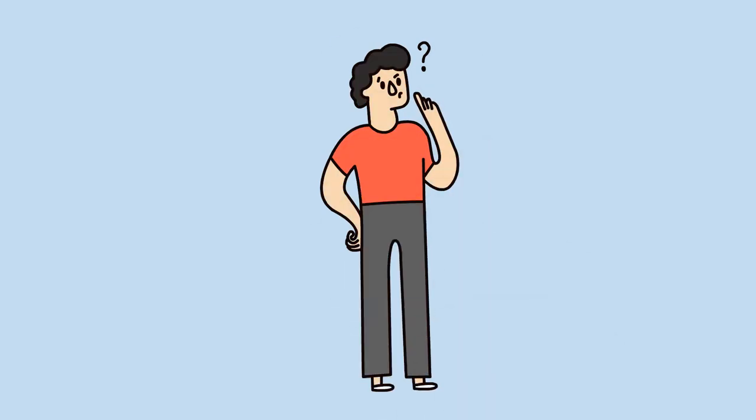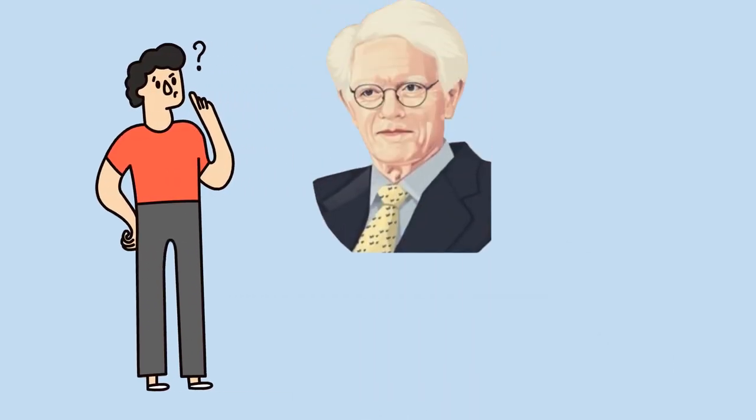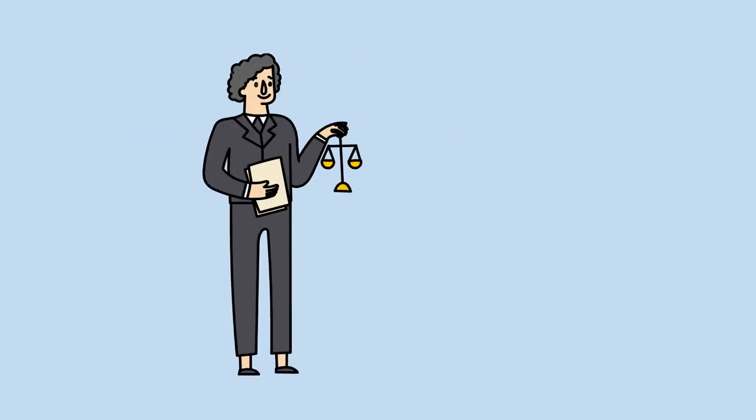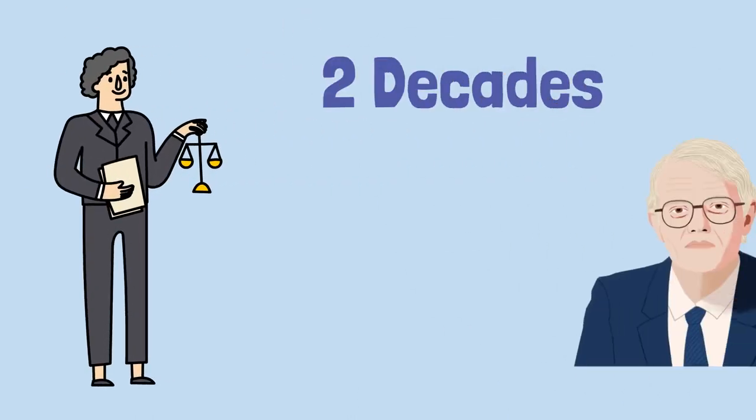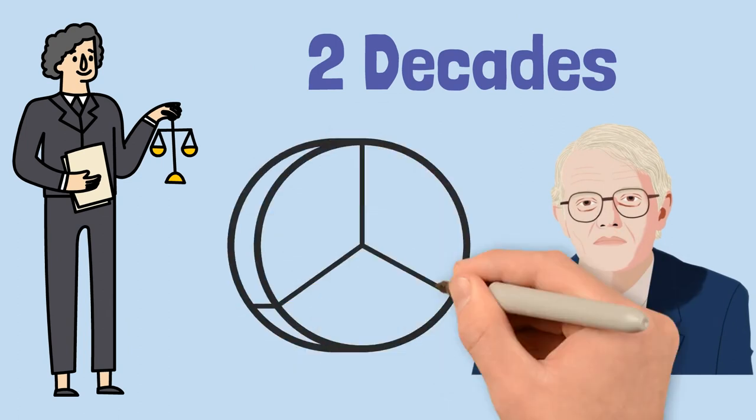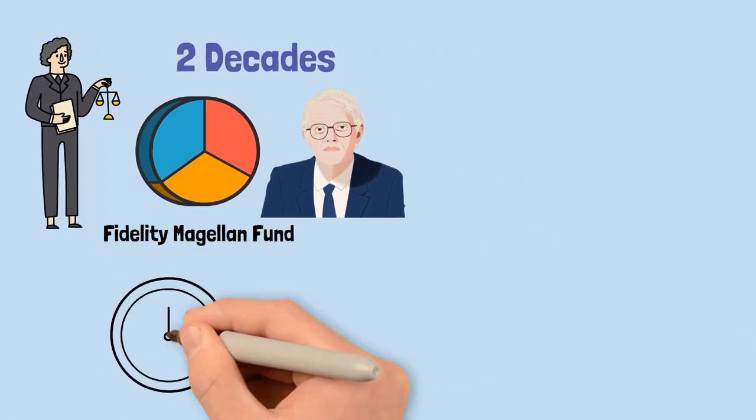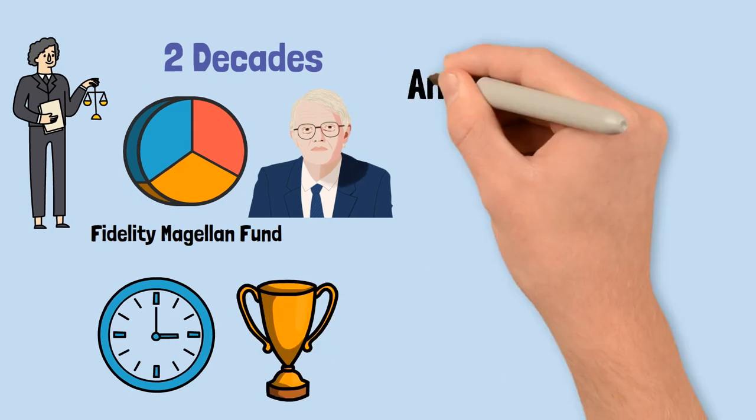For those of you who are unfamiliar, Peter Lynch is a name that will forever be remembered in the history of investing. With a career spanning over two decades, Lynch managed one of the largest and most successful mutual funds of all time, the Fidelity Magellan Fund. During that time, he achieved an incredible annual return of 29%.